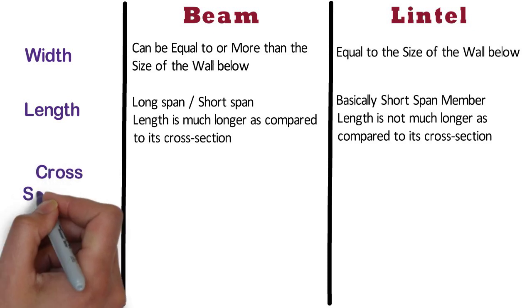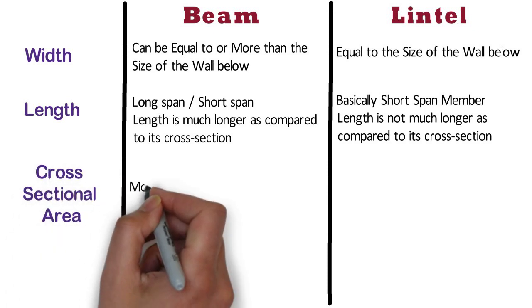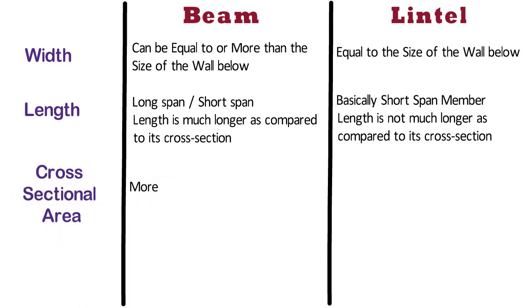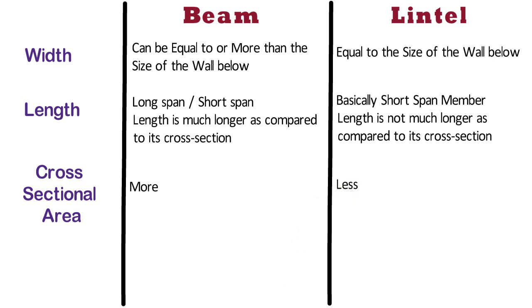Cross-sectional area. The cross-sectional area of a beam is more as compared to a lintel. Whereas, the cross-sectional area of a lintel is less as compared to a beam.